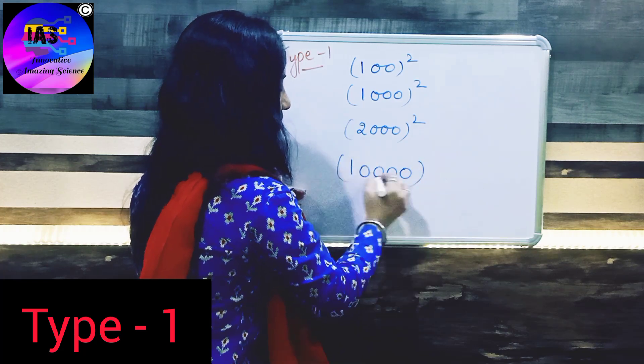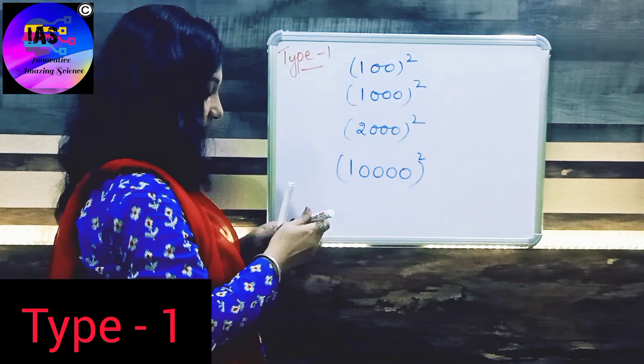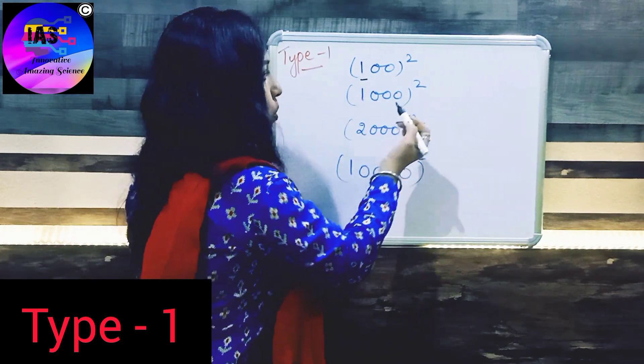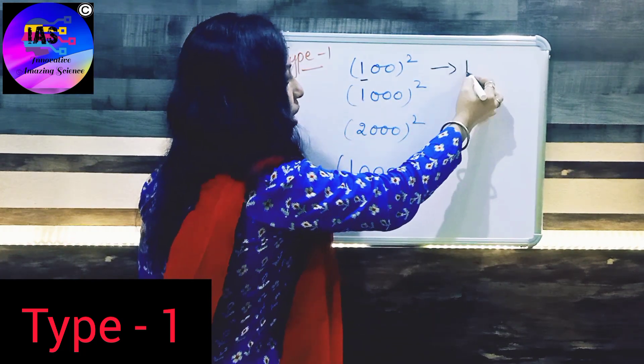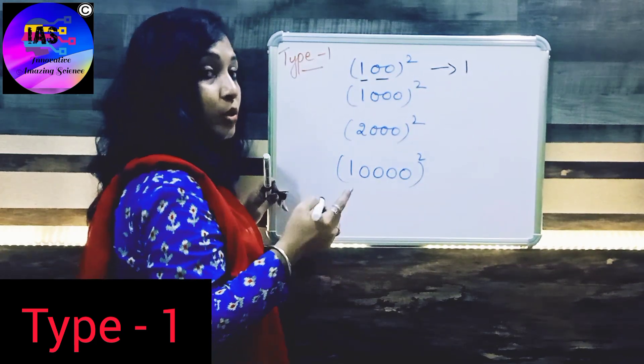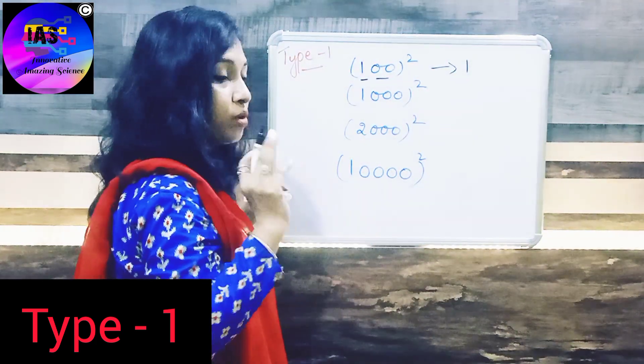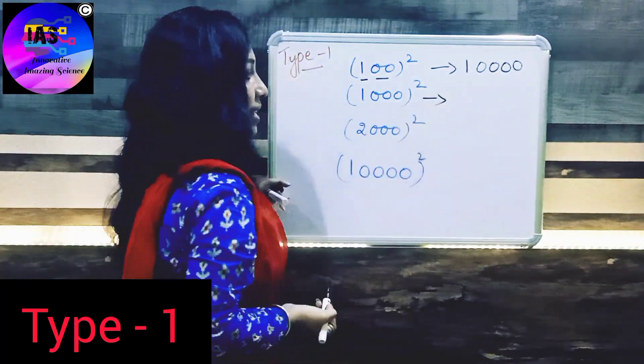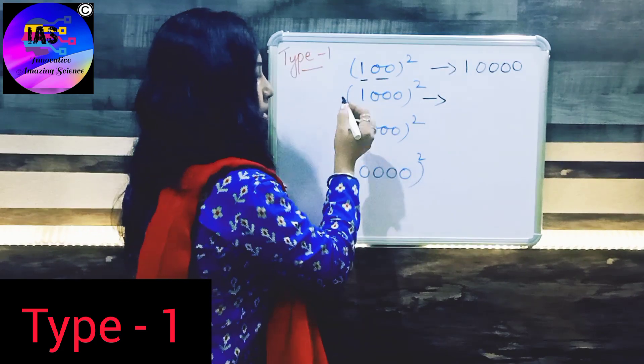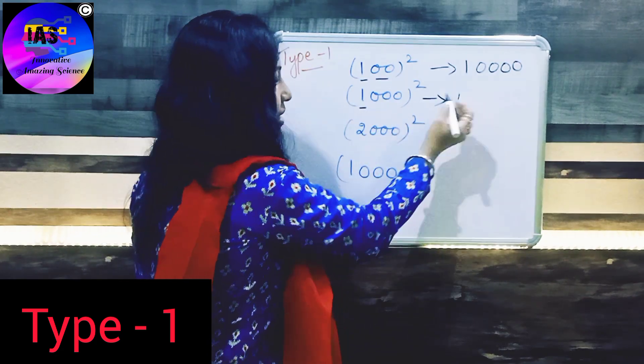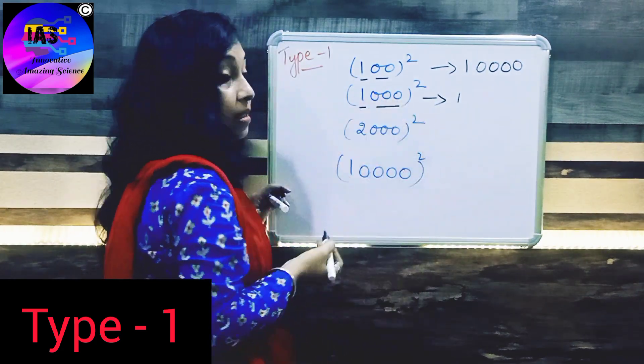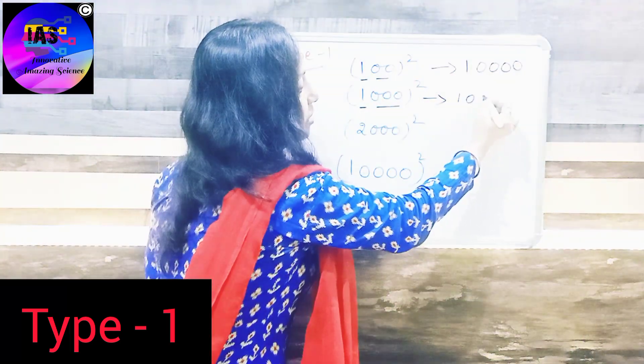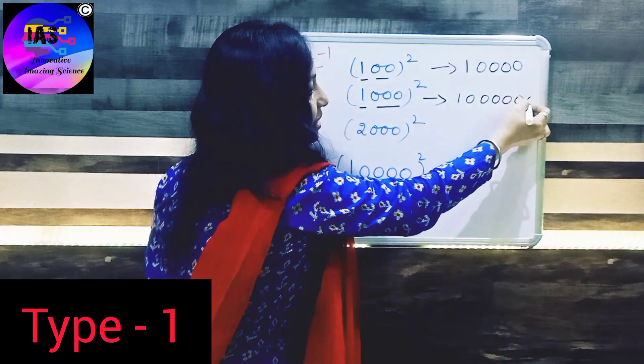Now let's see a few other examples. Let's take 100 square, 1000 square, 2000 square, 10000 square. Let's find out the answers. We know 1 square is 1, so the answer would be 1, and here you have double zero zero, so in the answer it will be 4 zeros: 1, 2, 3, and 4. Let's see 1000 square - 1 square is 1, and here you have 3 zeros, so in answer it would be 6 zeros.